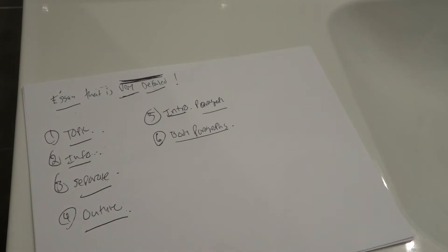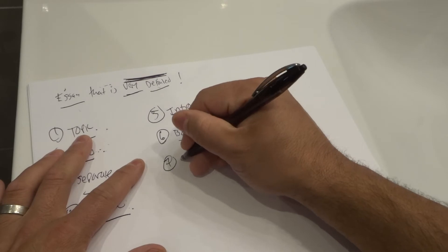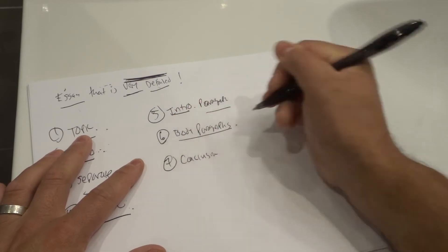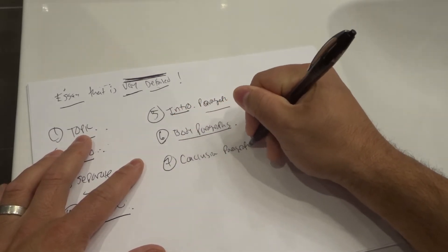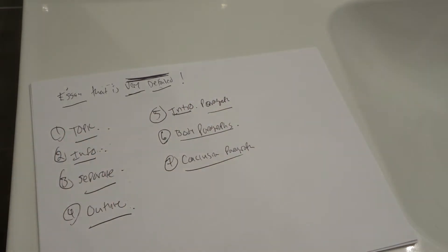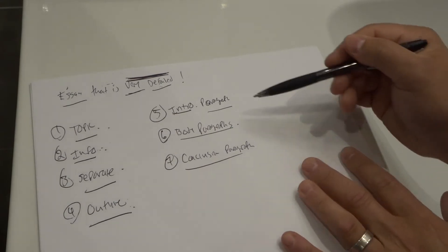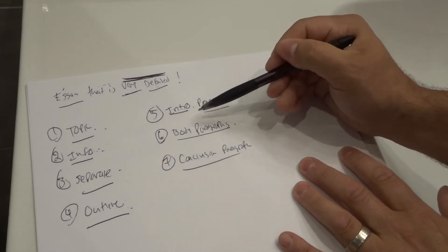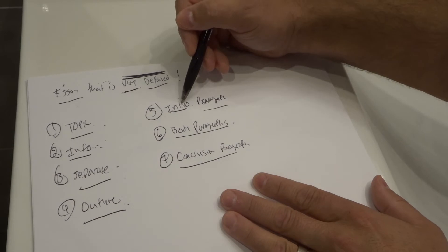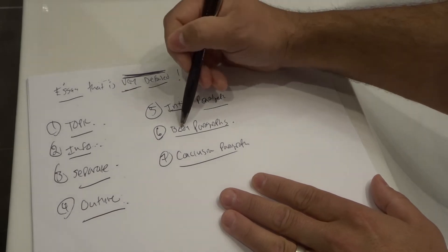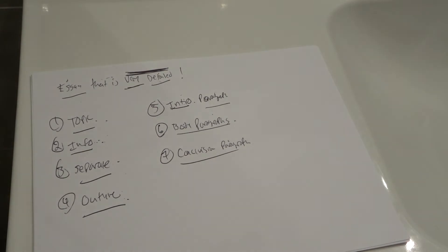The seventh step is to write your conclusion paragraph, which is going to summarize everything that you talked about in the intro paragraph and the body paragraphs. So essentially you'll have one intro paragraph, multiple body paragraphs, and then a conclusion paragraph at the end.